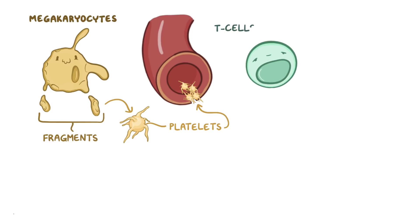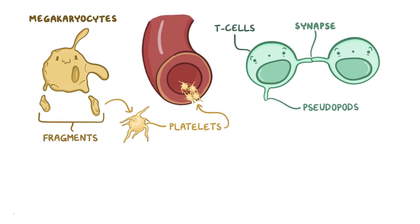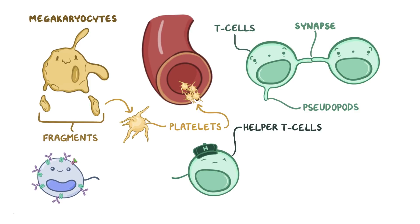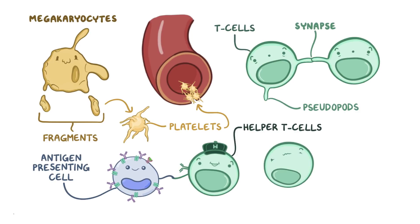Another cell type, the T-cells, which are a type of immune cell, also rely on the cytoskeleton being able to change shape. When they encounter a pathogen, T-cells form pseudopods, or false legs, that reach out and synapse or communicate with other cells. Think of it like they're shaking hands to exchange information. Helper T-cells get activated when they form an immunological synapse with antigen-presenting cells, and once they're activated, helper T-cells activate B-cells which generate antibodies which help destroy the pathogen.